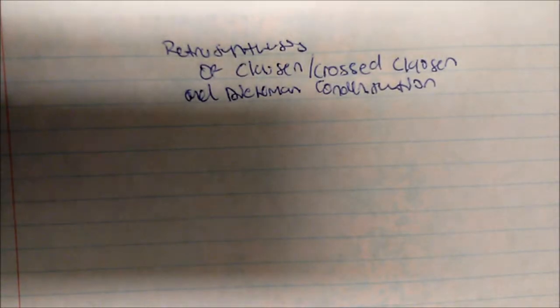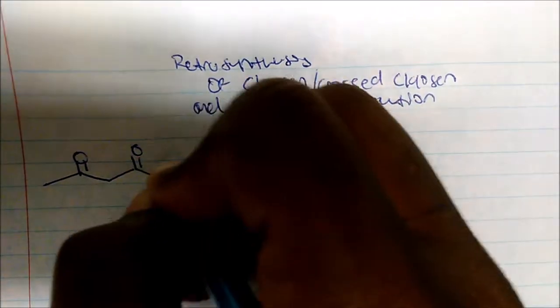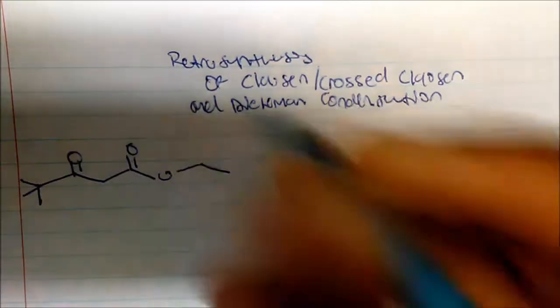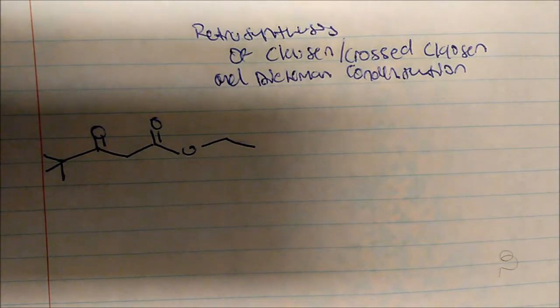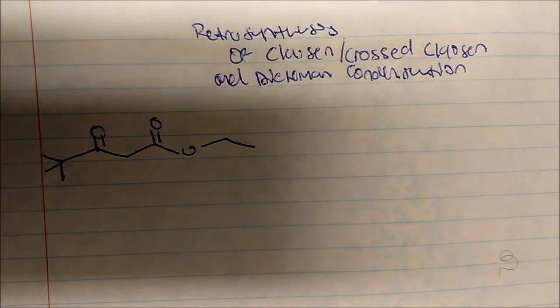I'm going to talk about the retrosynthesis of Claisen and Cross-Claisen and Dieckmann condensation. So what if on a test you were given the idea to make this molecule? How would you make this molecule? Well, the first thing that stands out is this is a beta-ketoester, and we know with a beta-ketoester we're looking at some sort of Claisen condensation.